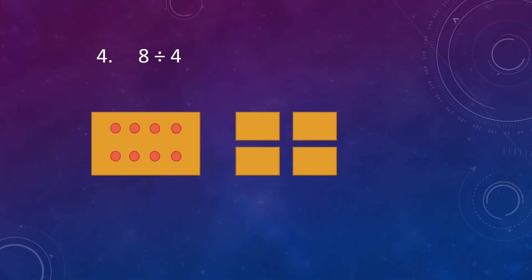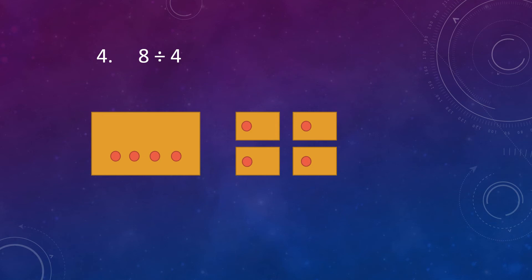Our fourth example is 8 divided by 4. Here 8 dots are given and we have to divide them equally between 4 boxes. Put a dot in each box — take a dot and put it in the first box, then take another dot and put it in the second box, take a third dot and put it in the third box, and take a fourth dot and put it in the fourth box. Put the dots equally in each box. We are left with 4 dots to divide — again, divide these 4 dots equally in 4 boxes.